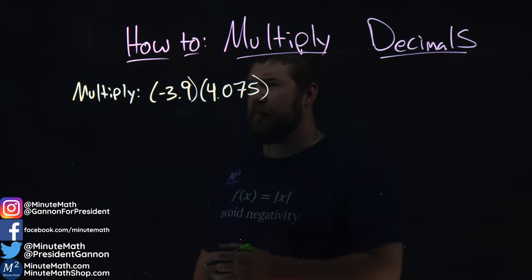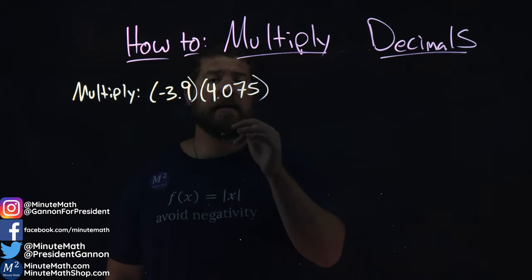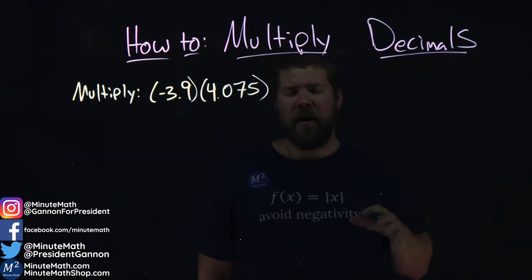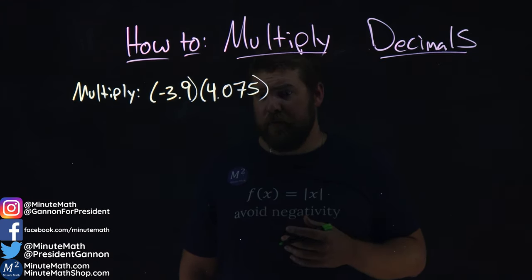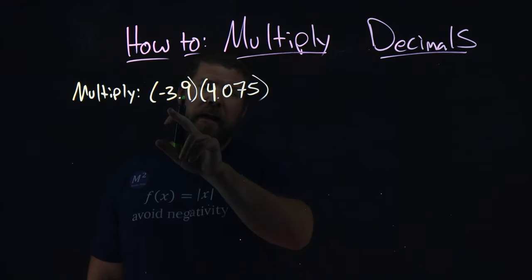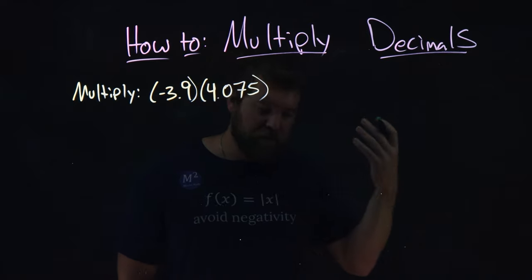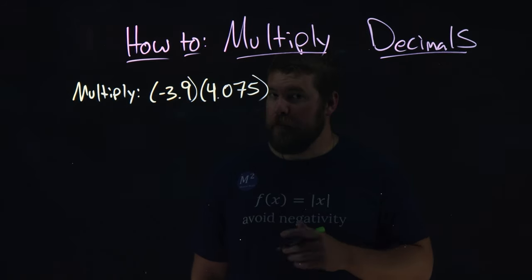We're given this problem right here. We need to multiply negative 3.9 times 4.075, and we're going to use this example to really show how to multiply decimals. Now, one thing we see, a negative times a positive gives us a negative number. Keep that in mind.